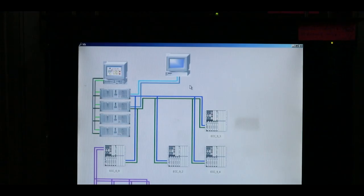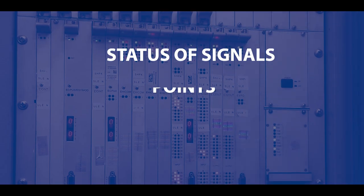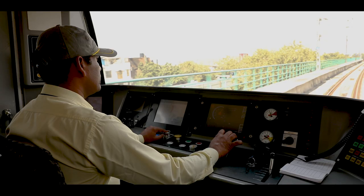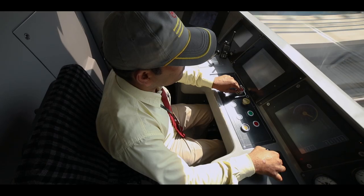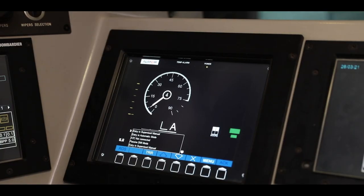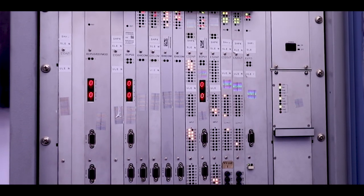The station signaling computer has all the required information regarding the status of signals, points, track circuits, etc. for the relevant section. This information is provided in real time to the onboard train control computer, which decides whether it is required to increase or decrease the speed of the train or to stop altogether. This interlinking of information about various signaling equipments through signaling computers, with the objective to ensure safe passage to trains always, is known as computer-based interlocking.